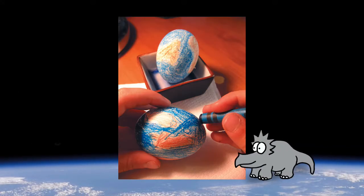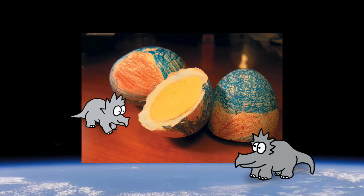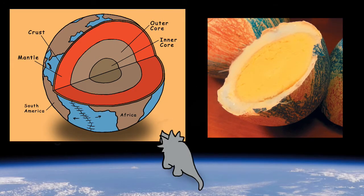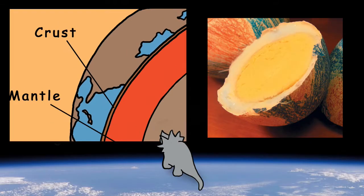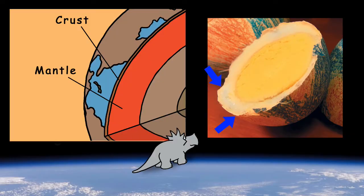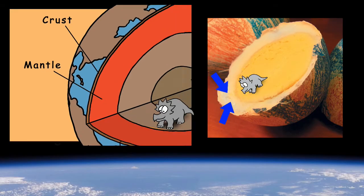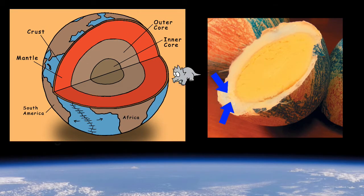Earth is much like a hard-boiled egg. Both consist of three major layers of different composition. Earth's surface layer, the crust, is like the thin, brittle shell of the egg. Below the crust, Earth has a thick layer called the mantle, which is like the whites of the hard-boiled egg. Then at the Earth's center, there's the core, which can be compared to the yolk.